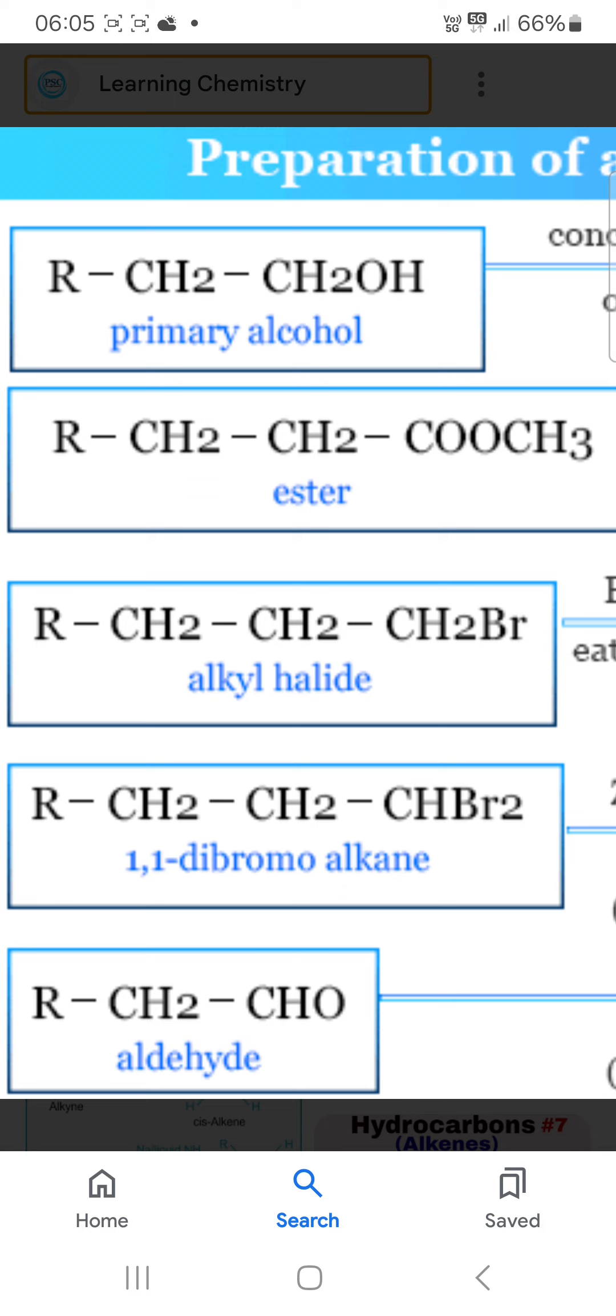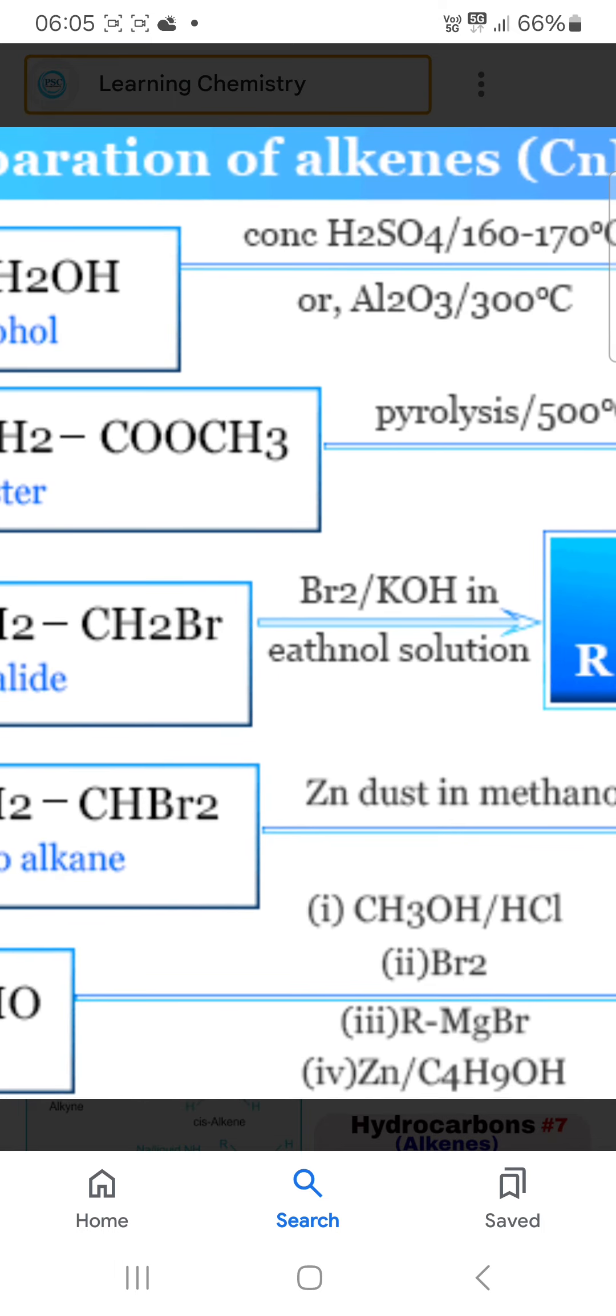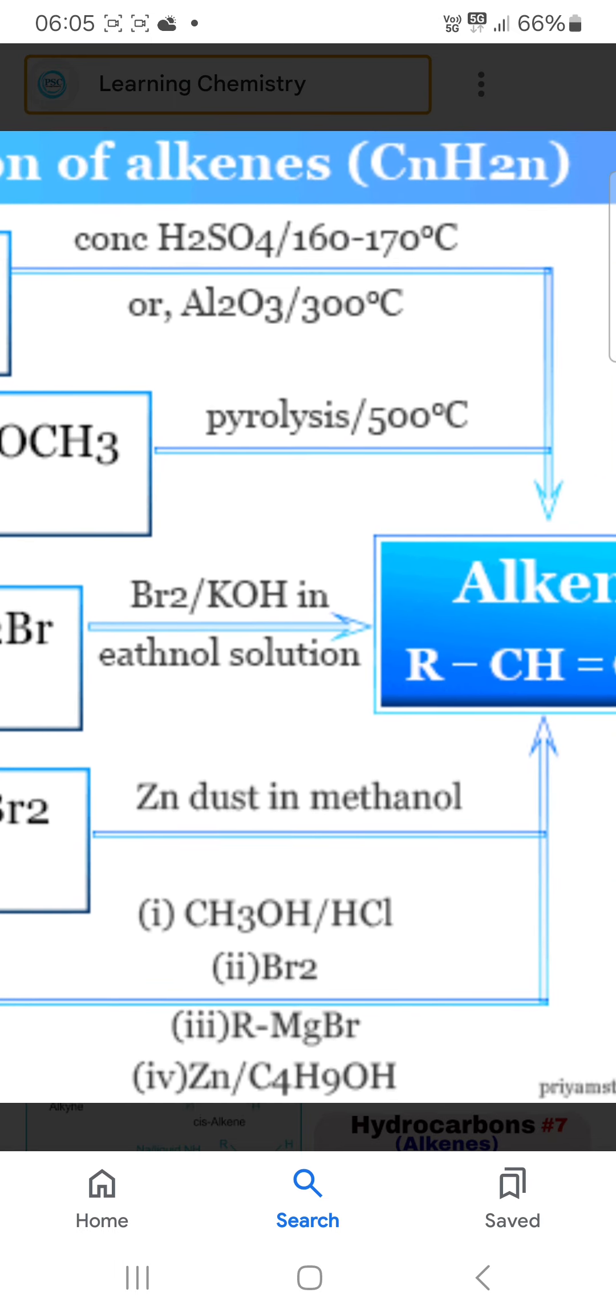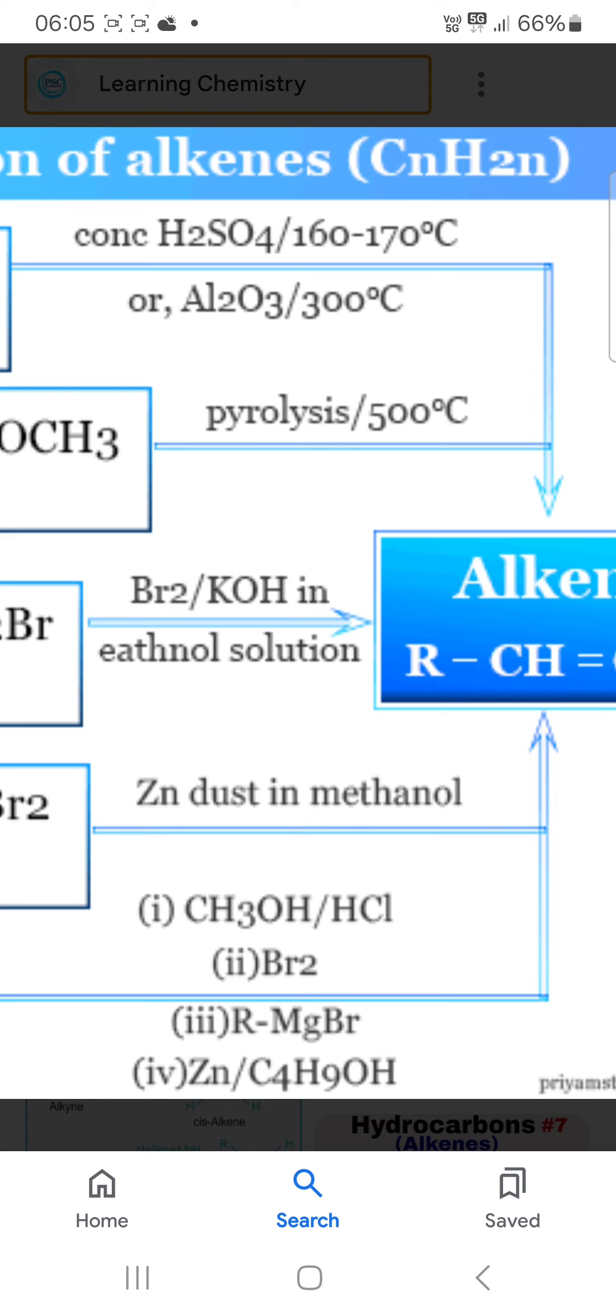First route: from primary alcohol. If you have primary alcohol, it undergoes dehydration with concentrated sulfuric acid at 160 to 170 degrees Celsius, or aluminum oxide at 300 degrees Celsius, you will get alkene.